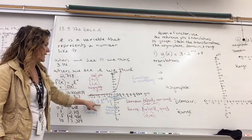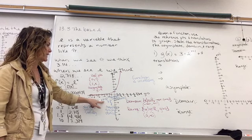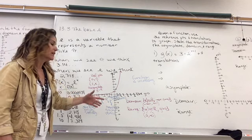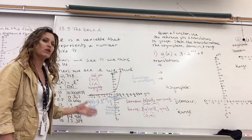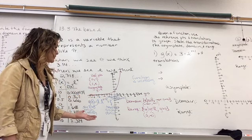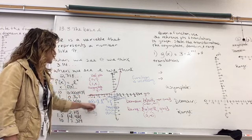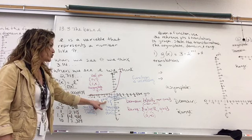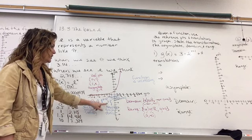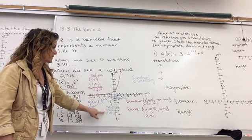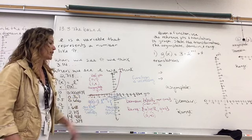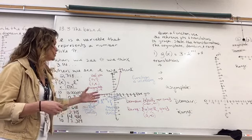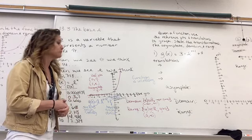g of x equals a times e to the x minus h plus k. Very familiar, very similar to what we've been doing with all our functions. A stretches the graph vertically. H translates the graph horizontally. K translates the graph vertically. The values of a, h, and k are not changing. We do not have b in this case.